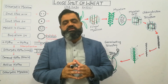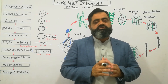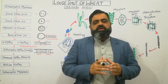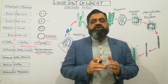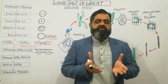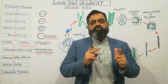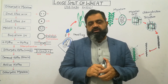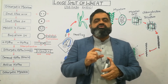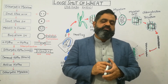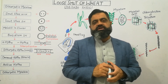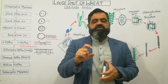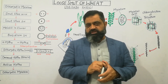This life cycle is also known as loose smut of wheat. It is because these spores are produced without any membrane — they are not enclosed by a membrane of the wheat kernel. Due to the absence of a membrane around their structure, this smut fungus is known as loose smut of wheat.